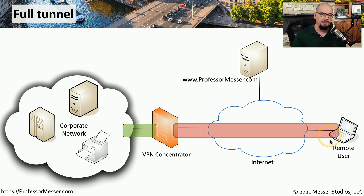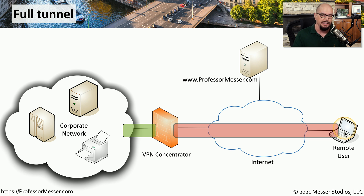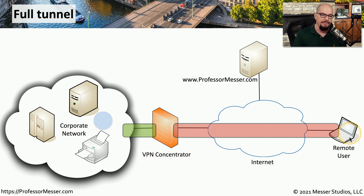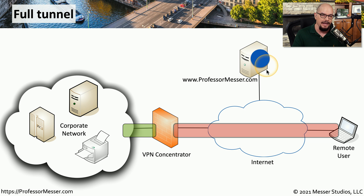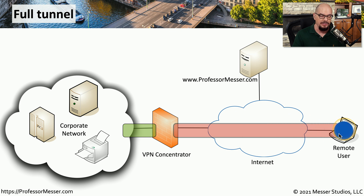In our previous coffee shop example, the remote user had a VPN tunnel to a VPN concentrator, which dropped all of that traffic onto the corporate network. But there may be times when the remote user needs to communicate with devices elsewhere on the internet. If this is configured as a full tunnel, then all traffic sent to the corporate network goes over that tunnel, and any traffic going elsewhere on the internet must first go through the VPN concentrator at the corporate network before being redirected out to the internet.